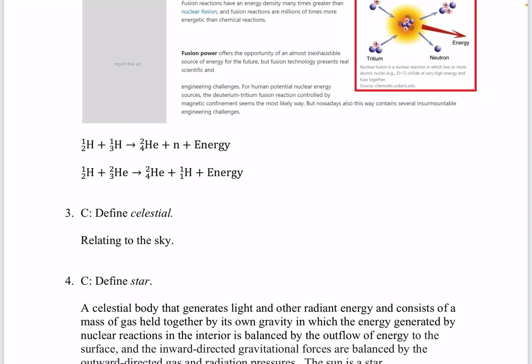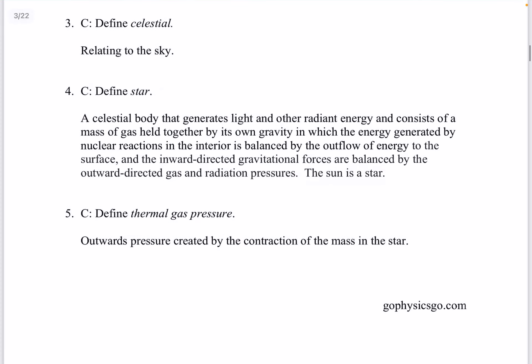Question 3. Define celestial. That's relating to the sky. Question 4. Define star. A celestial body that generates light and other radiant energy and consists of a mass of gas held together by its own gravity in which the energy generated by nuclear reactions in the interior is balanced by the outflow of energy to the surface and the inward directed gravitational forces are balanced by the outward directed gas and radiation pressures. So the sun is a star. I'll get into more detail of what I just said for question number four.